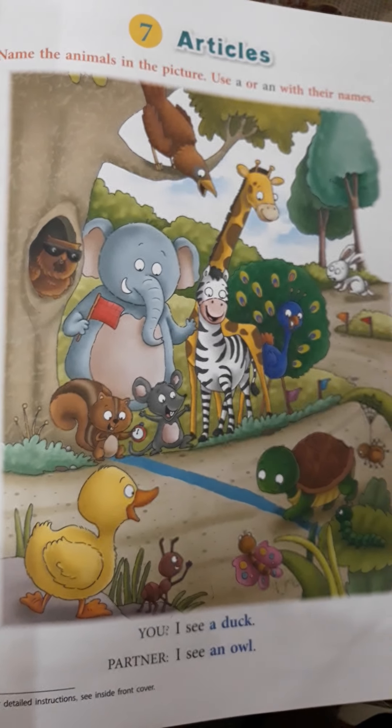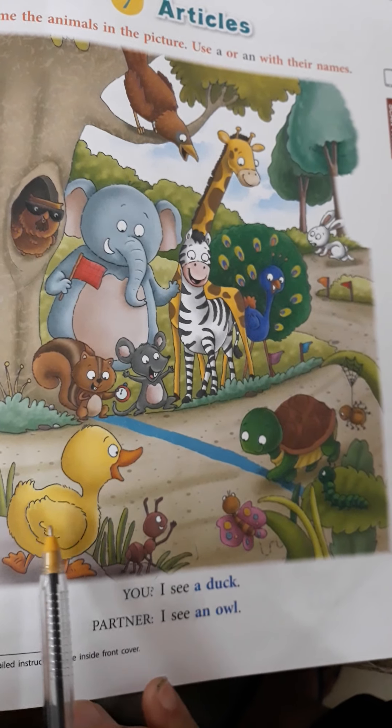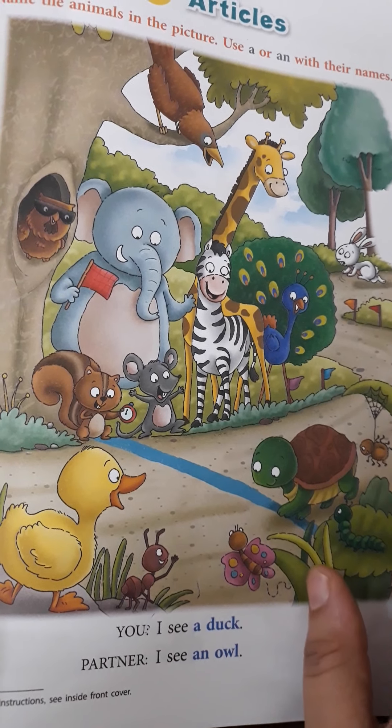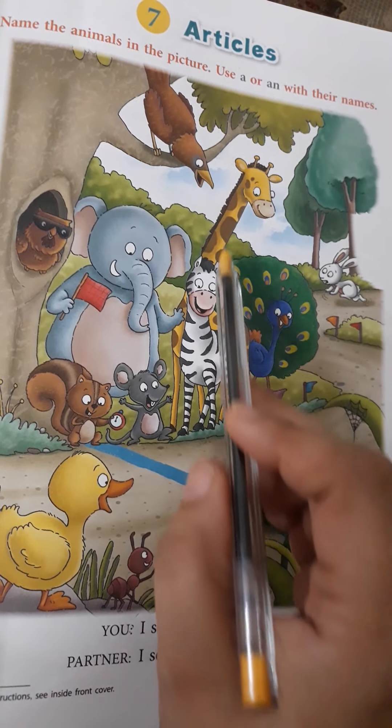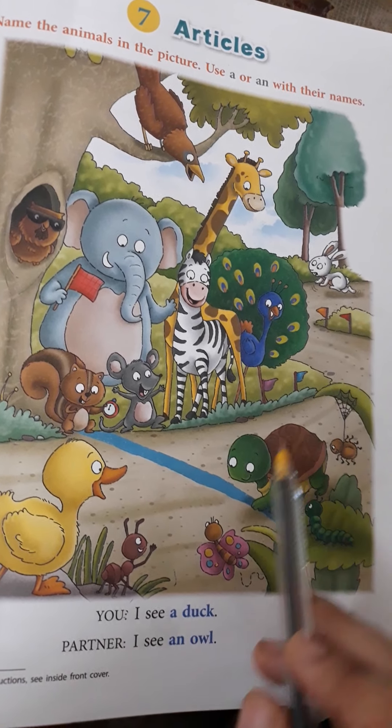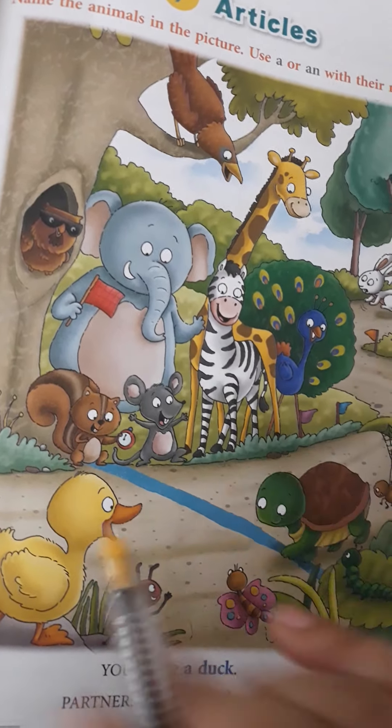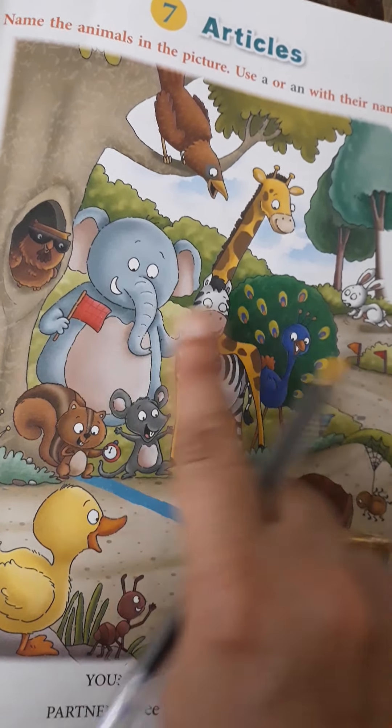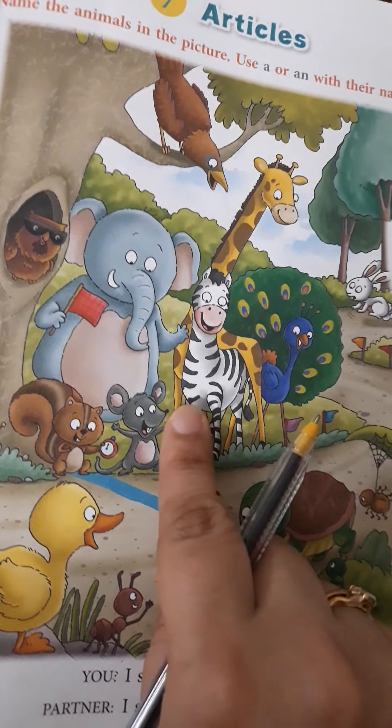Let me show you a picture. This is in your grammar book, chapter number 7, articles. This is a zoo. A picture from a zoo. Look at the animals here. You can see a number of animals here, right? Like a crow, owl, elephant, zebra, giraffe, peacock, rabbit, turtle, duckling, grasshopper, butterfly, ant. Right? So many animals here. Now, let's see. And all the animals are singular noun now, right? All the animals are singular. Because they are one in number. All the nouns are singular.